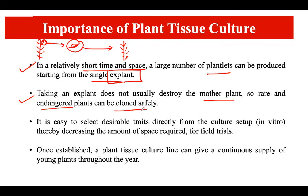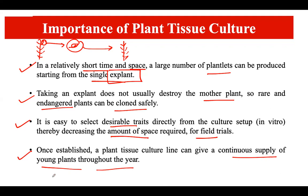When extracting a small explant from a plant to preserve endangered species, the mother plant is not destroyed. It is also easy to directly introduce desirable traits into the culture setup without requiring large field trial spaces — genetic modifications can be made under laboratory conditions. Furthermore, once a culture has been established, the plant tissue culture line can give a continuous supply of young plants throughout the year by repeatedly subculturing onto new media.